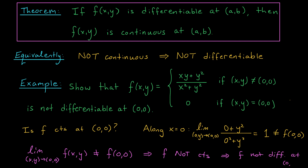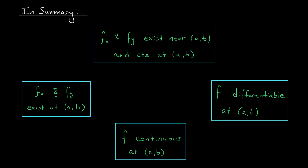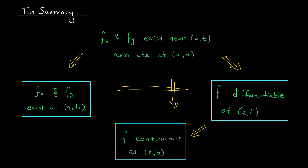Let's end this video with a quick summary of all the connections we've just developed. The strongest property is that the partial derivatives exist near (a, b) and are continuous at (a, b). If this condition holds, then your partial derivatives will both exist, but even more importantly, your function will be differentiable at (a, b) — it can be closely approximated by its tangent plane. This also means that our function will be continuous at (a, b), since differentiability implies continuity, just like in Calc 1. Finally, it's built into our definition of differentiable that both partial derivatives exist at (a, b), so we also have an arrow in that direction.